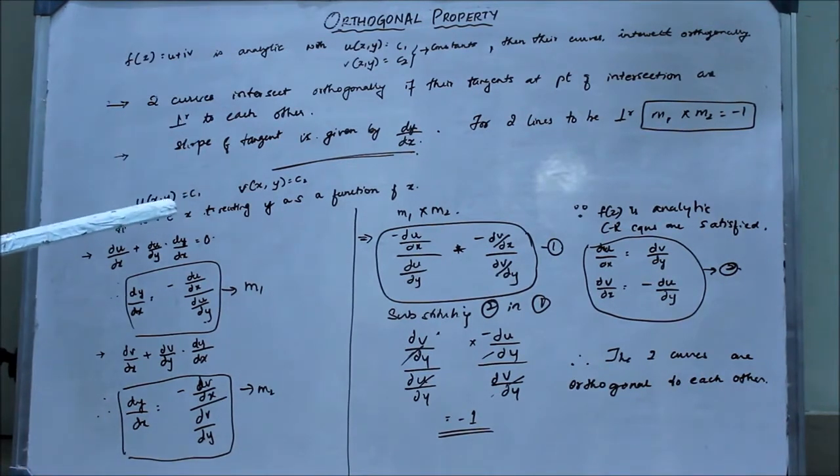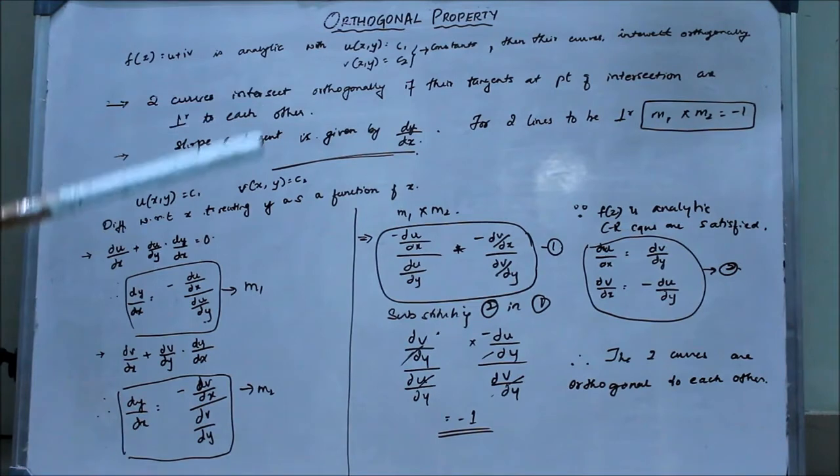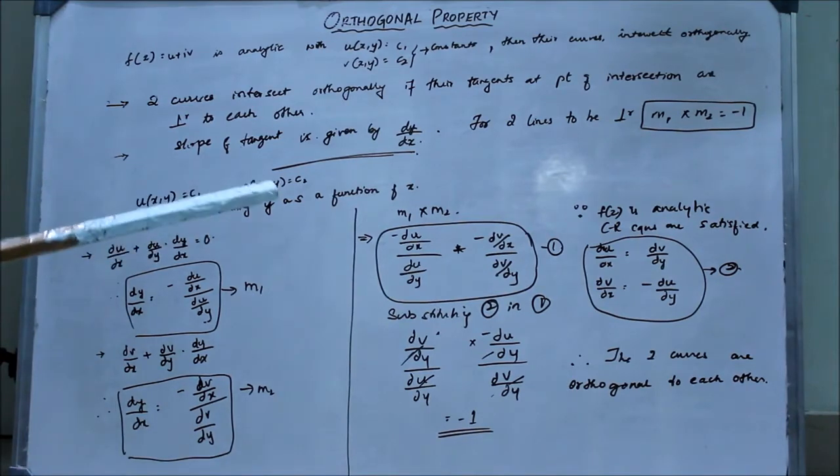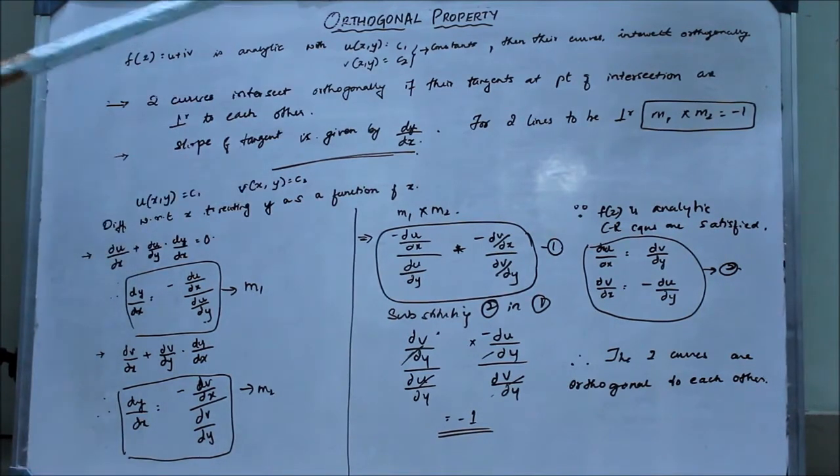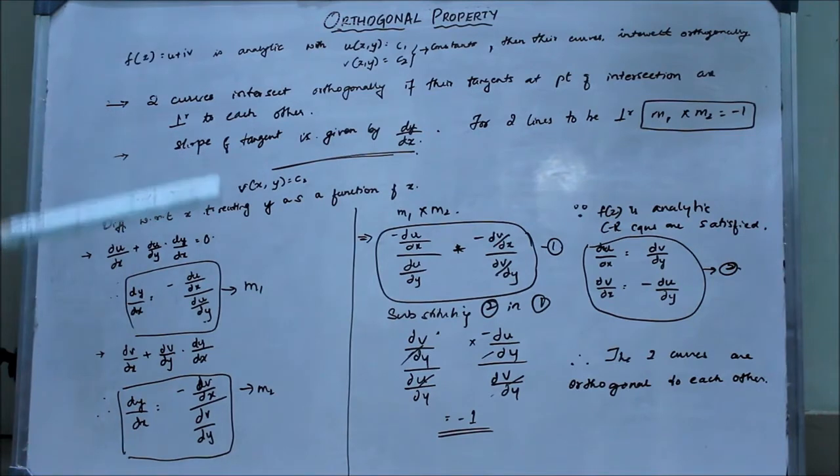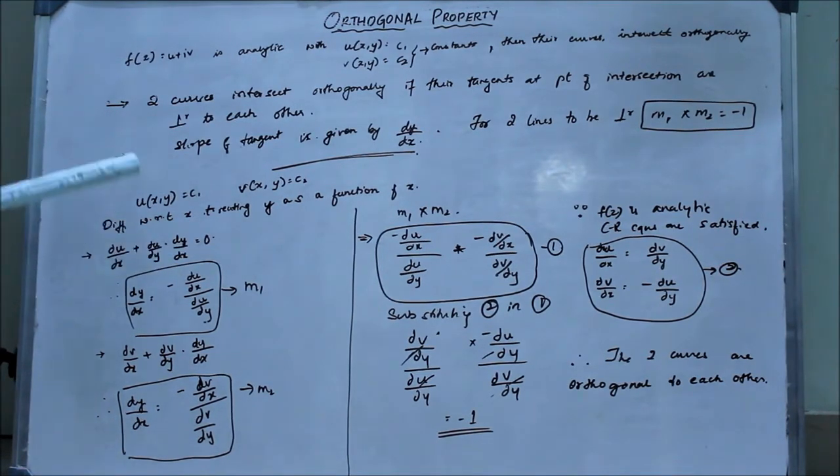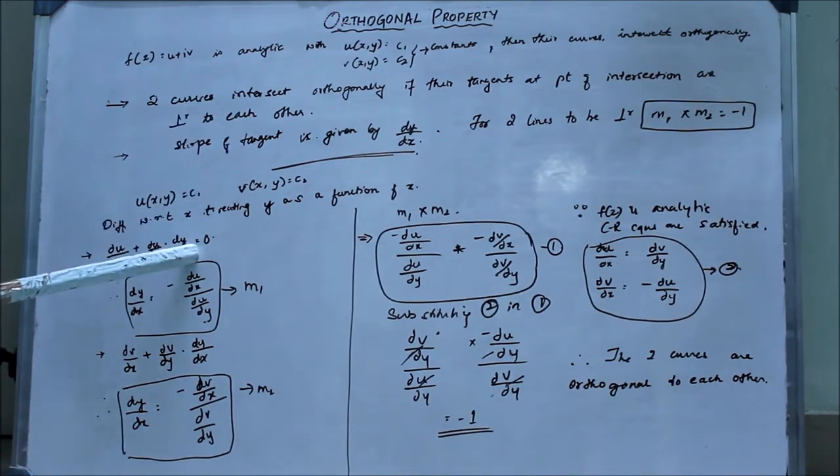Now we have u(x,y) = c1 and v(x,y) = c2. Differentiating with respect to x and treating y as a function of x in both these functions,